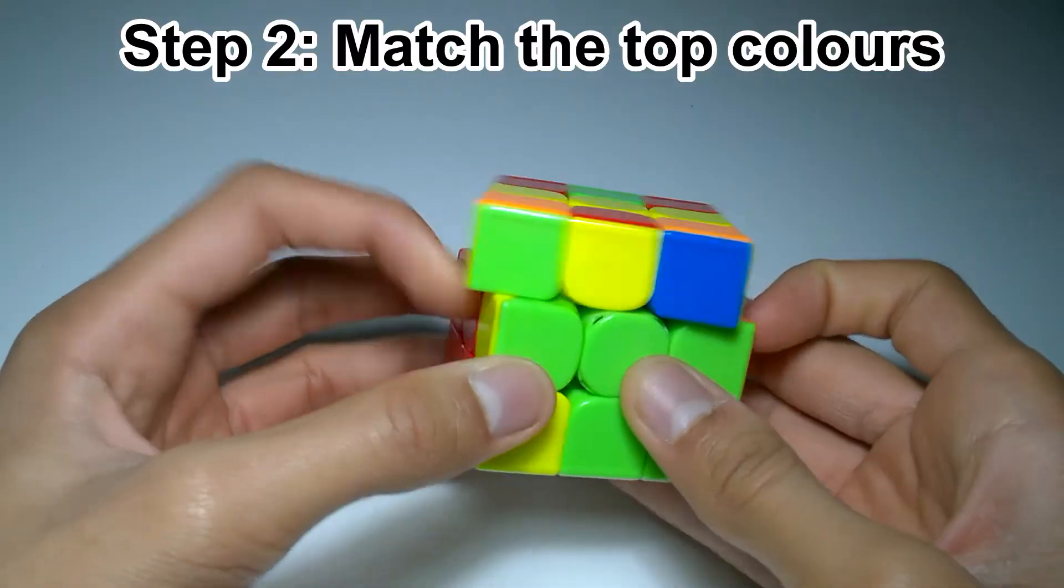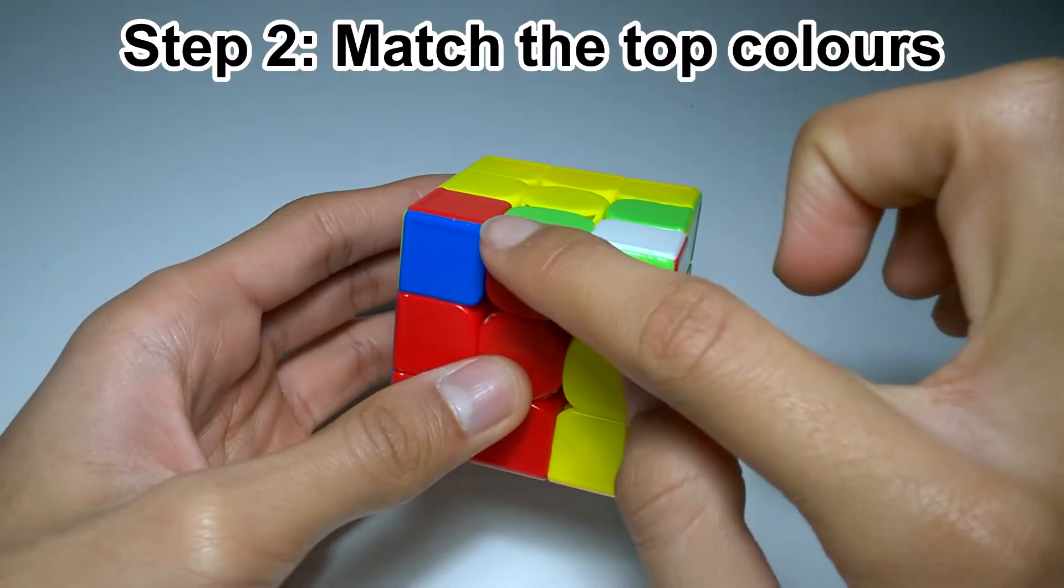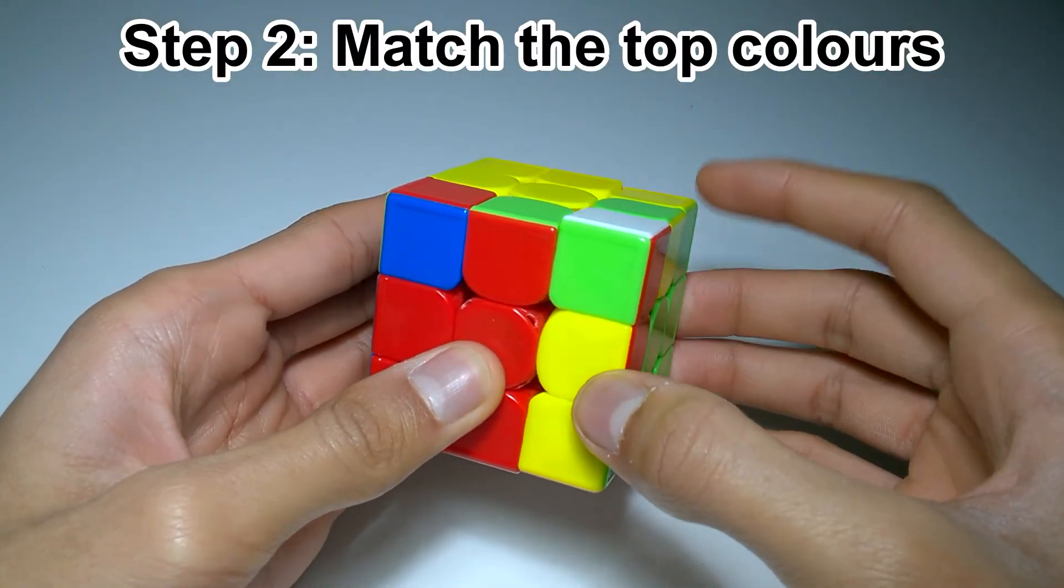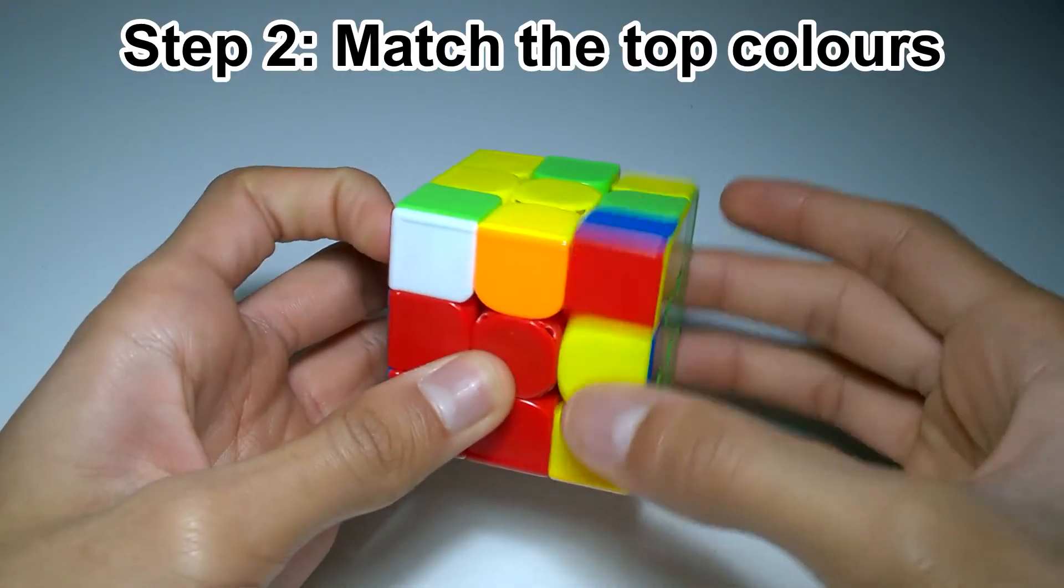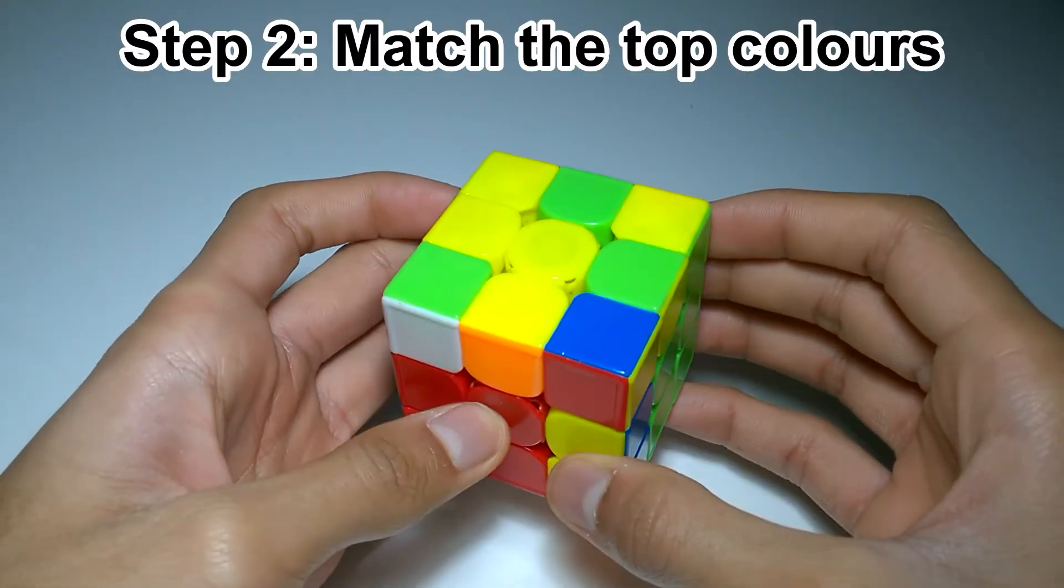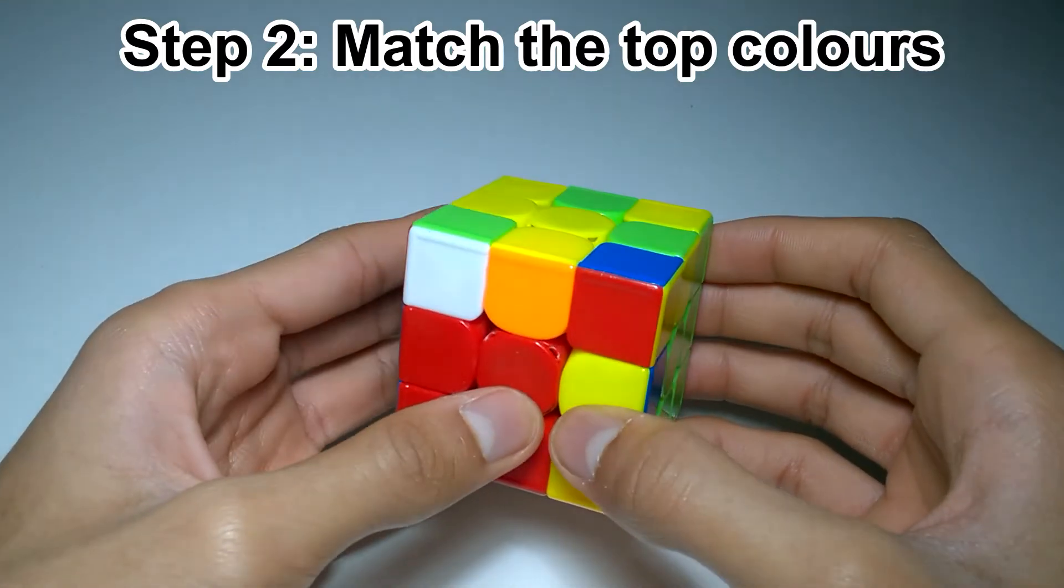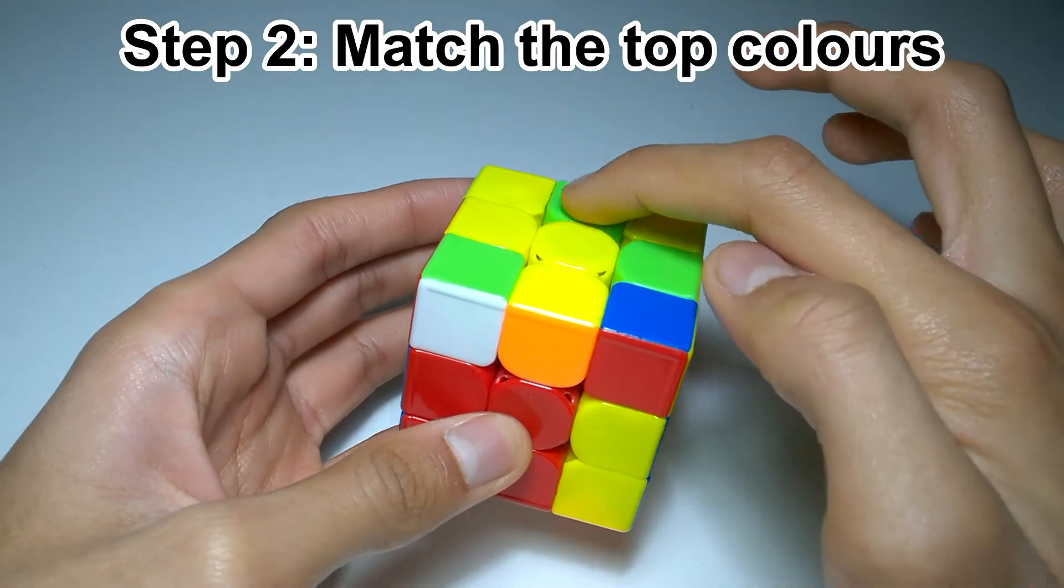But watch what happens to the edge when you do this. If the edge becomes inserted into the slot while you do these three moves, then do the same three moves one more time. Keep doing this until the corner has the same top color as its corresponding edge. So here, green matches green.